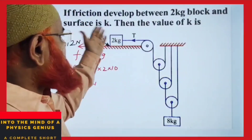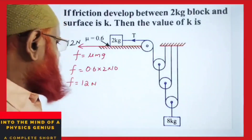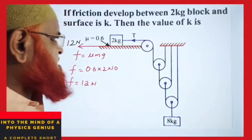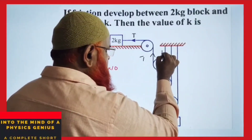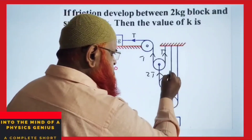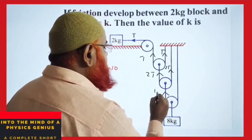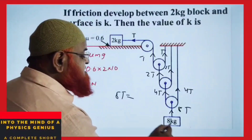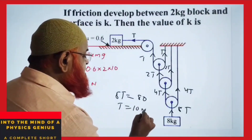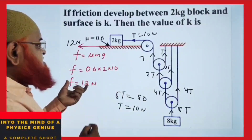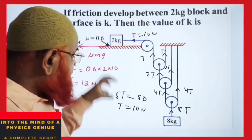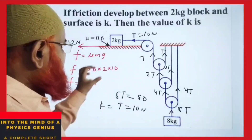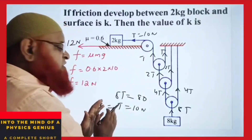Find the friction force on the surface due to a multiple pulley system. The limiting friction is 12 newtons. In the pulley system, tension T doubles at each pulley: T → 2T → 4T → 8T. So 8T equals the applied force of 80 newtons, giving T = 10 newtons. Since the applied force of 10 newtons is less than the limiting friction of 12 newtons, the friction equals the applied tension: friction = 10 newtons.